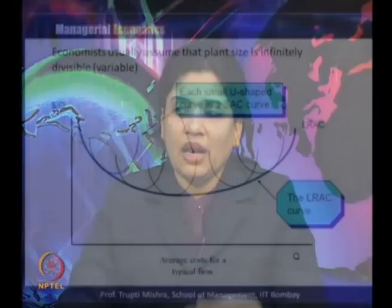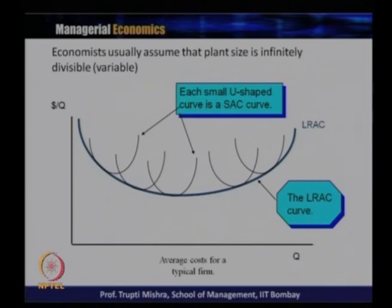The long run average cost curve is typically drawn assuming plant size is infinitely divisible. Each small U-shaped curve is a short run average cost curve. On the graph, the x-axis represents output and the y-axis represents average cost. The long run average cost curve is the summation of each small U-shaped short run average cost curve, differing in terms of output level and the cost associated with that output.